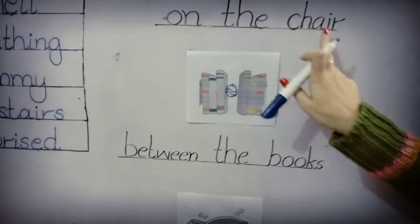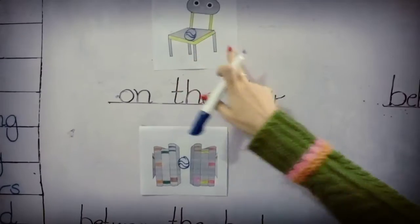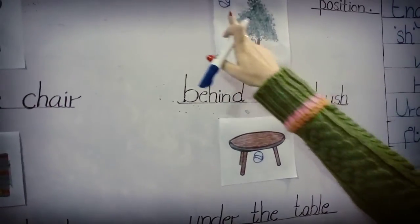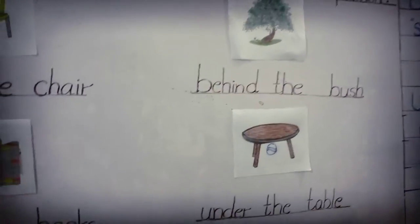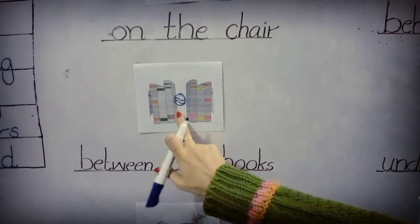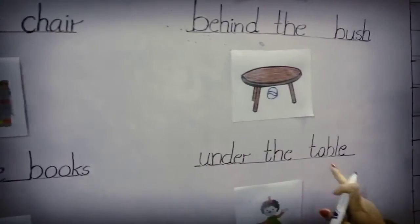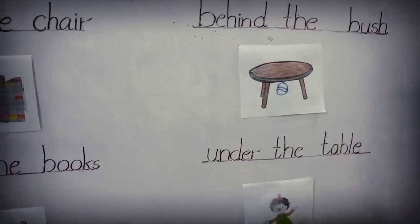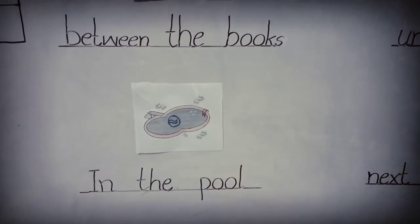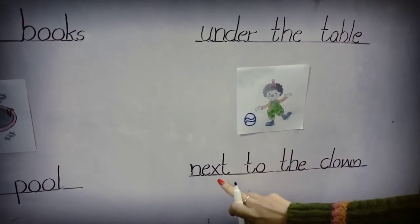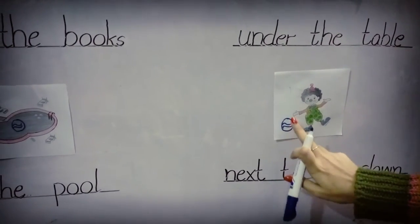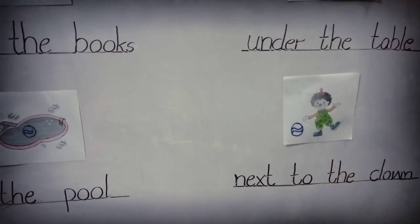On the chair — chair ke ooper hum ne ball banaya hai. Behind the bush — bush means jhaari, jhaari ke right pe hum ne ball banaya hai. Between the books — books ke darmiyan mein hum ne ball banaya hai. Under the table — table ke niche hum ne ball banaya hai. In the pool — pool ke andar hum ne ball draw kiya hai. And the last: next to the clown — joker ke right pe hum ne ball draw kiya hai.